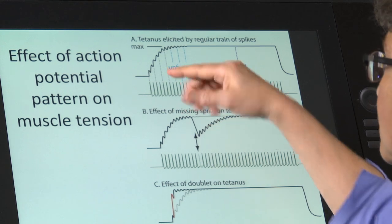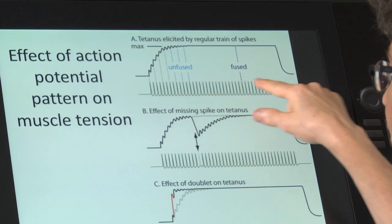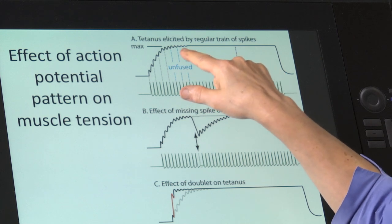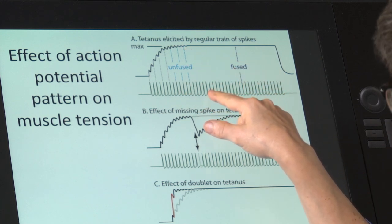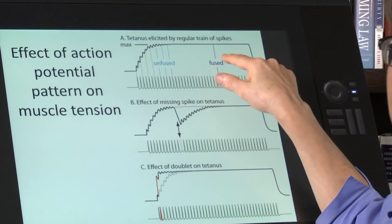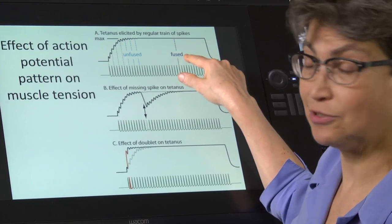If you continue this train of action potentials a little bit longer, what you'll see is that the ability to see the effect of any single action potential on muscle tension disappears, and that is called fused tetanus.